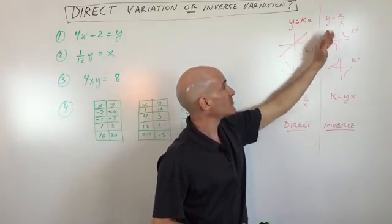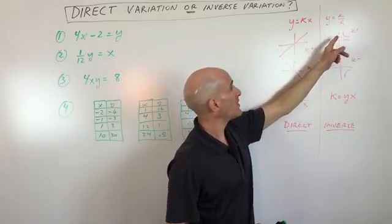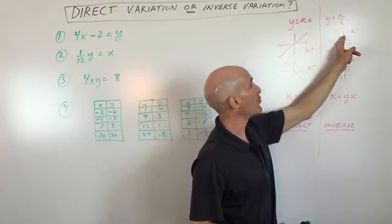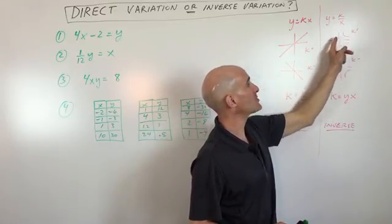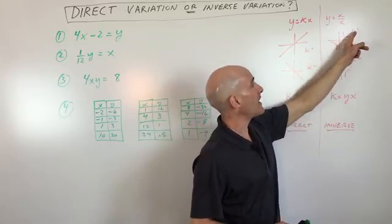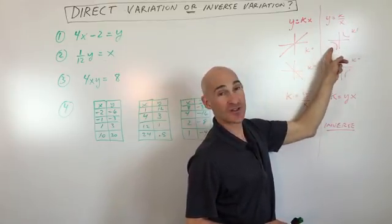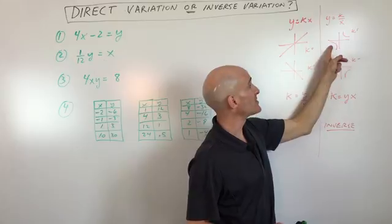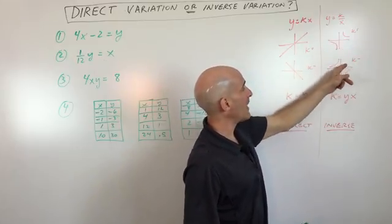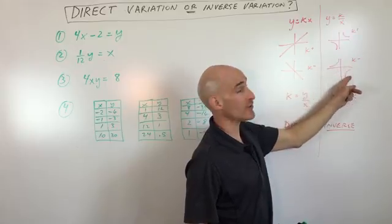Now let's look at the inverse variation ones. They form a hyperbola shape where the curve is approaching the x-axis and approaching the y-axis, getting closer and closer. If k is positive, the two branches are in the first and third quadrants. If k is negative, it reflects over the x-axis so the branches are in the second and fourth quadrants.